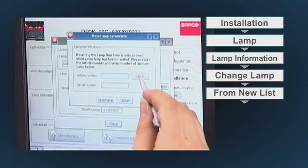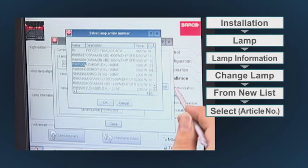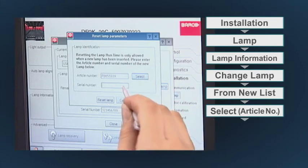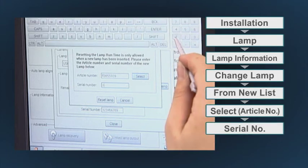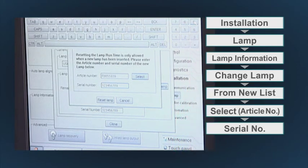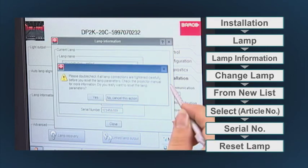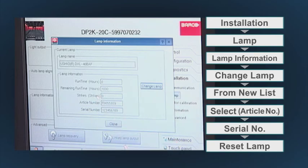Tap on select to display a list of possible article numbers. Select an article number and tap OK. The software will validate the selected article number. Enter the serial number. Press reset lamp. When the confirmation message appears, press yes. Press close.